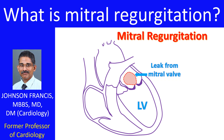The blood which leaks into the left atrium returns back into the left ventricle when it relaxes after a contraction. This increases the load on the left ventricle as it has to contract more forcefully.